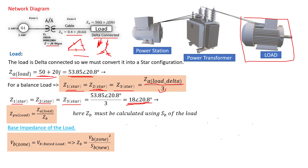V_B zone must equal the V_B rated of the load. Imagine a motor rated for 230V AC — the transformer must supply exactly 230V, no more, otherwise the motor windings will overheat. So V_B zone must be what's rated for that load. Because the rated value isn't given here, we calculate V_B zone using the formulas from tutorial one. If you haven't watched tutorial one yet, please click the link on your screen to catch up. Replacing all the values, we get V_B zone equal to 242.67V.